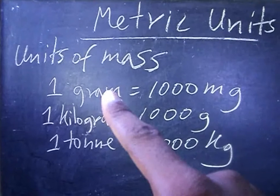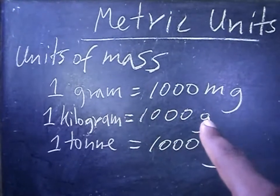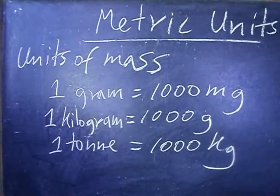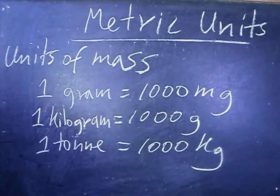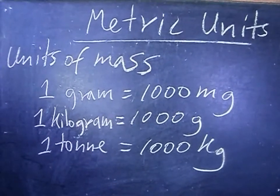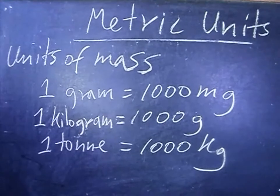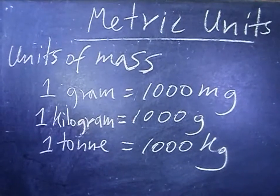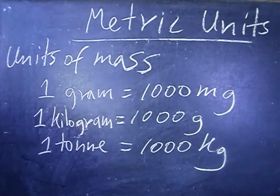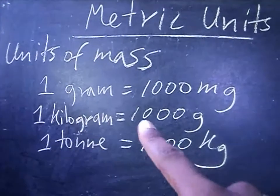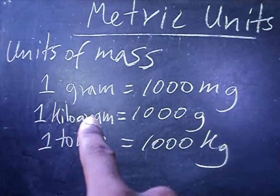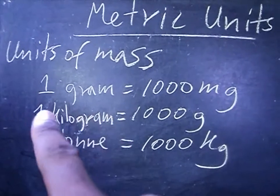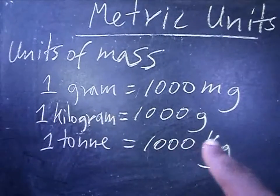1000 grams is equal to one kilogram. If you remember from the units of length, the prefix 'kilo' — as in kilometer — means a thousand. So the 'kilo' in kilogram also means a thousand, giving us 1000 grams in one kilogram.